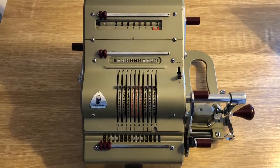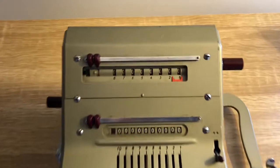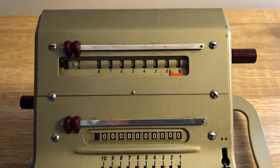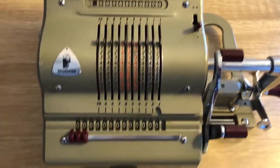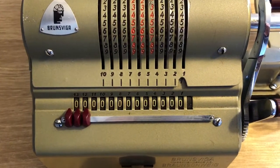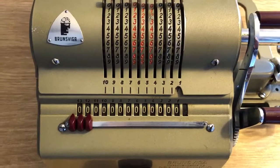This is the Brunsviga 13 RK. This register up here is our revolutions register. That one's the rotor register and that one's our accumulator down here. And for division we're going to need all three.